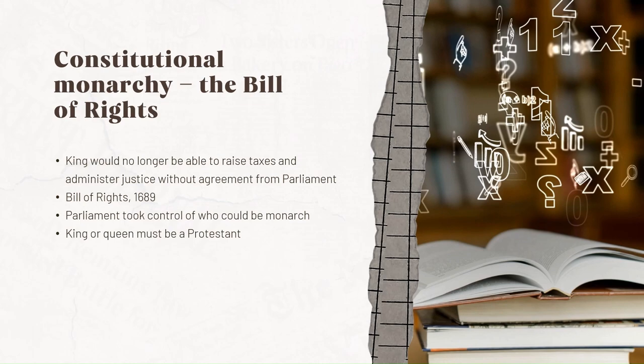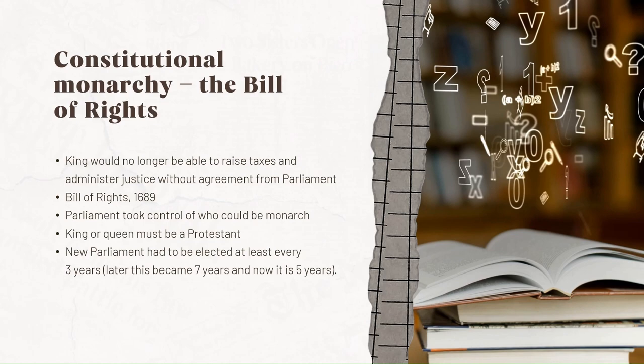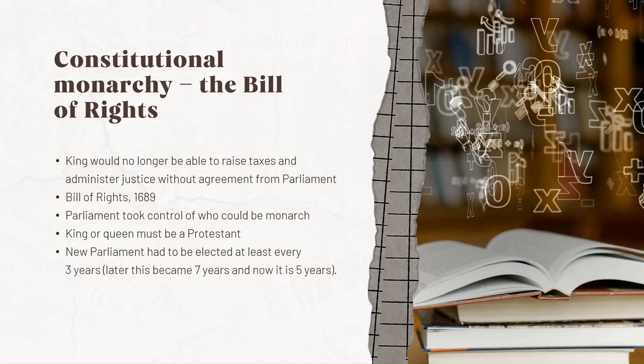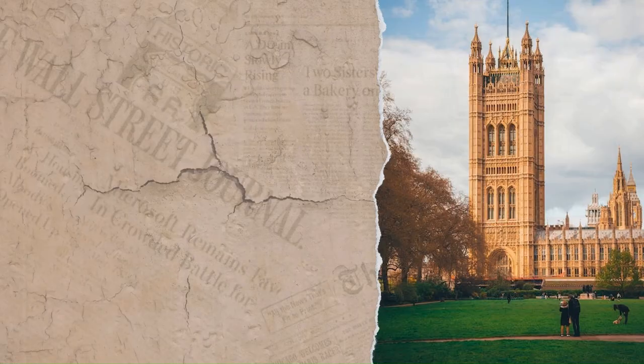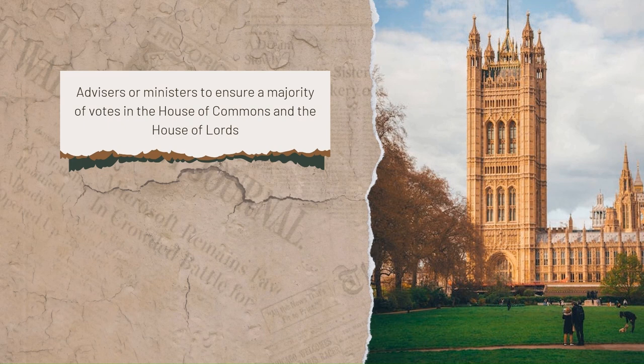Parliament took control of who could be monarch and declared that the king or queen must be a Protestant. A new Parliament had to be elected at least every three years — later this became seven years and now it is five years. Every year the monarch had to ask Parliament to renew funding for the army and the navy. These changes meant that, to be able to govern effectively, the monarch needed to have advisers, or ministers, who would be able to ensure a majority of votes in the House of Commons and the House of Lords.